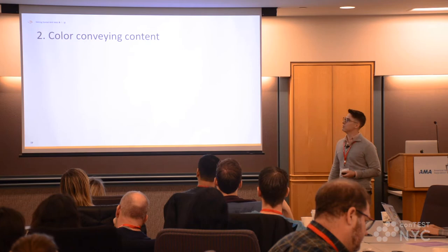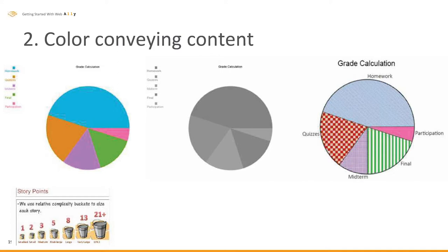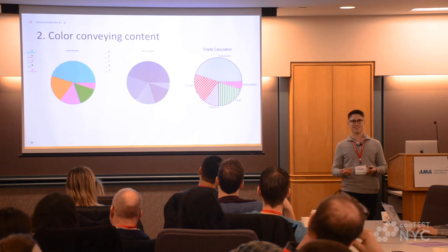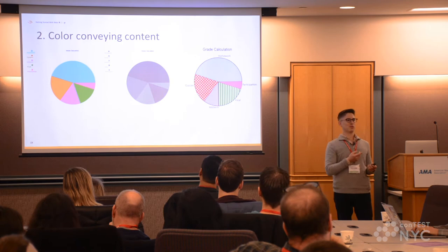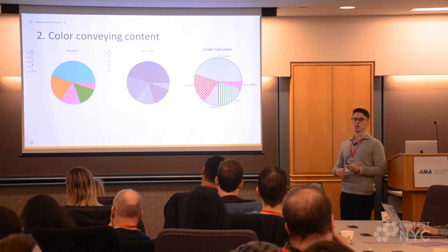The second issue is color conveying content. That large slice in blue represents homework, with the key on the left — but if you're colorblind or have difficulty seeing, you have no idea what that large slice of the pie represents. What we could do instead is use patterns, textures, or labels to make it possible for both colorblind and non-colorblind users to convey the same information. Making that happen — how many points? Twos and ones. Very simple fix — something we could get UX to consider going forward.